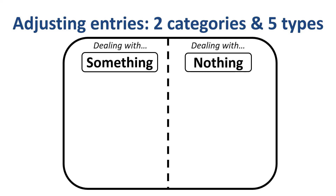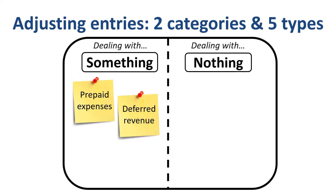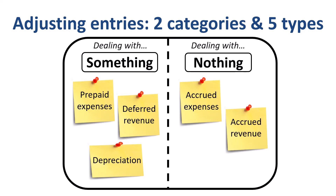If an adjusting entry deals with something, then something has been entered in the general ledger, but the amount needs to be moved or split between accounting periods. The three types in this category are prepaid expenses, deferred or unearned revenue, and depreciation. If an adjusting entry deals with nothing, then nothing has been entered in the general ledger yet, but certain expenses or revenues did occur that need to be accounted for in the current period. The two types in this category are accrued expenses and accrued revenue. The common theme is that we want to put revenues and expenses in the period they belong. Revenues are recognized when earned, and expenses are recognized when incurred.